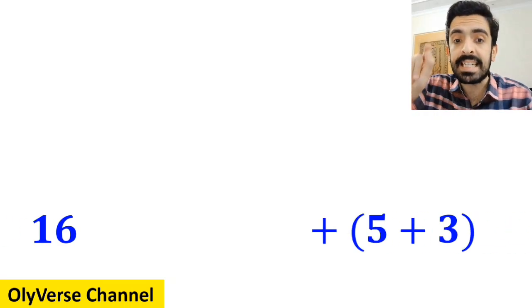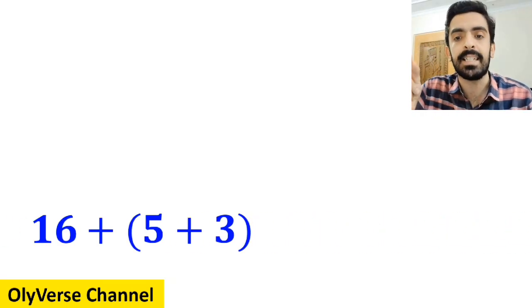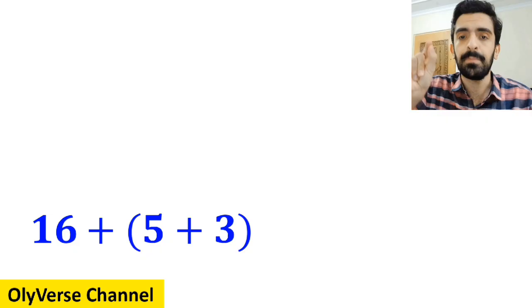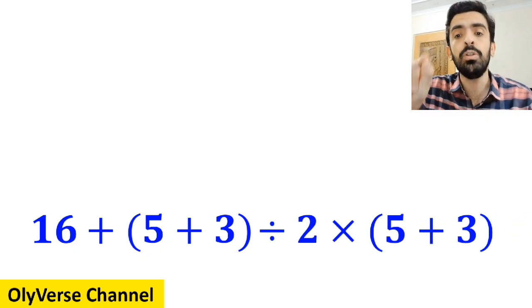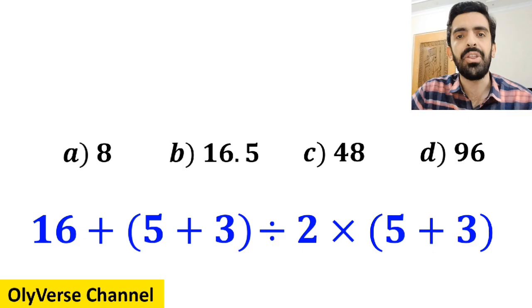What is the value of the expression 16 plus open parenthesis 5 plus 3 closed parenthesis divided by 2 times 5 plus 3 inside the parenthesis? Which option do you think is the correct answer to this question?